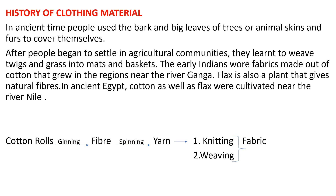History of clothing material: in ancient times, people used the bark or big leaves of trees, or animal skin, to cover themselves. After people began to settle in agricultural communities, they learned to weave twigs and grass into mats and baskets, and slowly they learned to weave cloth. Early Indians wore fabrics made out of cotton that grew in regions near the river Ganga.